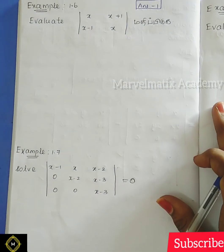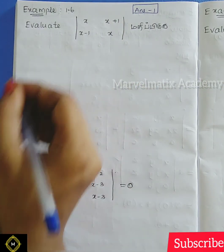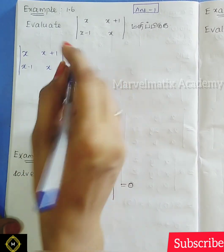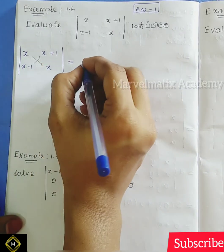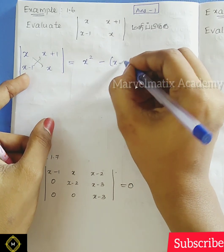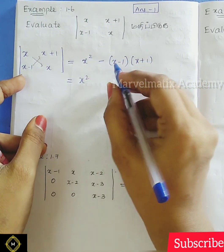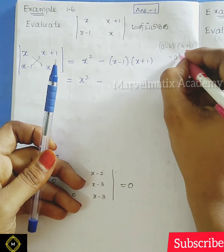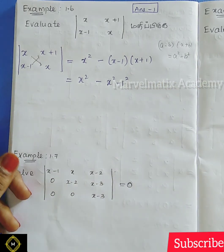So this is the next question. We have the determinant of x, x+1, x-1, x. Now, x minus 1 into x plus 1 — we know the formula: a minus b into a plus b is equal to a squared minus b squared. So we get x squared minus 1 squared.